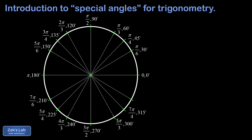Our final angle is 30 degrees more than 300, which is 330 degrees — equivalently, 30 degrees less than 360. In radians, we can compute 2 pi minus pi over 6. Multiplying 2 pi by 6 over 6 gives 12 pi over 6, and subtracting pi over 6 gives 11 pi over 6. So that final angle is 330 degrees or 11 pi over 6.